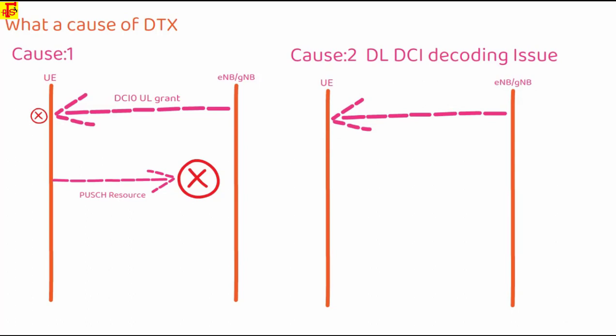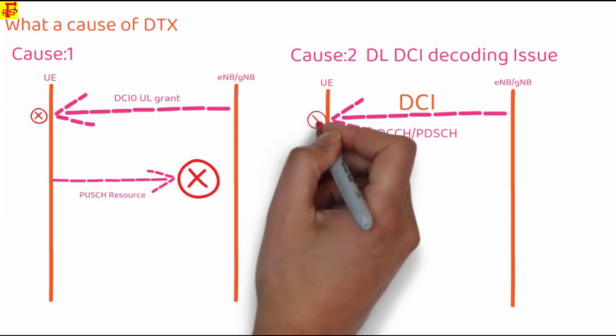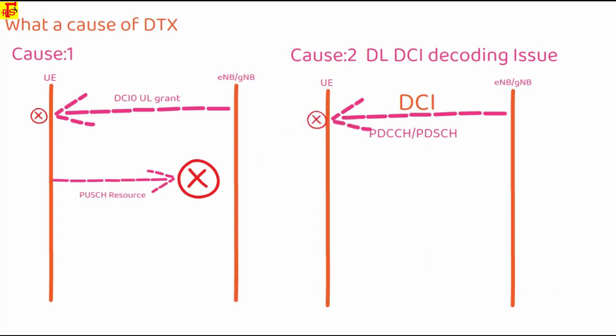Another reason for DTX is downlink DCI decoding issue. Downlink DCI are transmitted over PDCCH, and UE failed to decode the DCI for PDCCH, which can be due to various reasons such as PDCCH encoding issue, PDCCH configuration issue, or genuine PDCCH decoding failure due to poor channel condition.